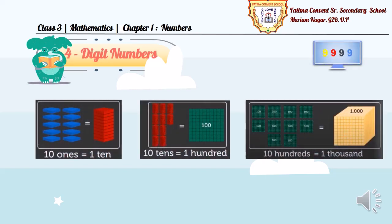Children, our next topic is 4-digit numbers. Before starting 4-digit numbers, let us recall your previous knowledge about place values. You can see in the diagram given here, the blocks for ones and tens. That is, 10 ones make 1 ten.